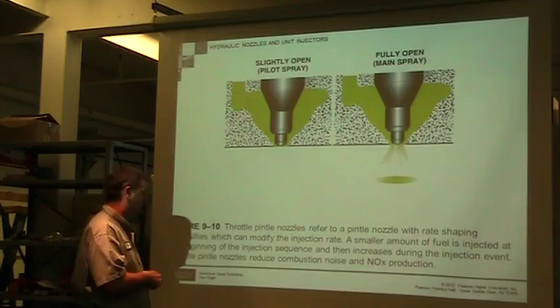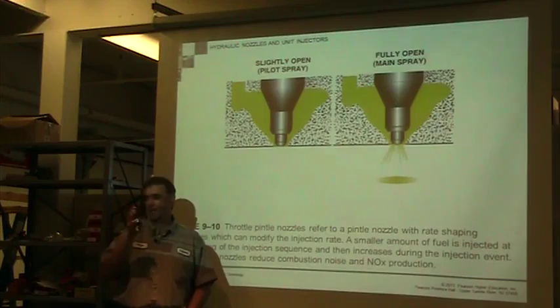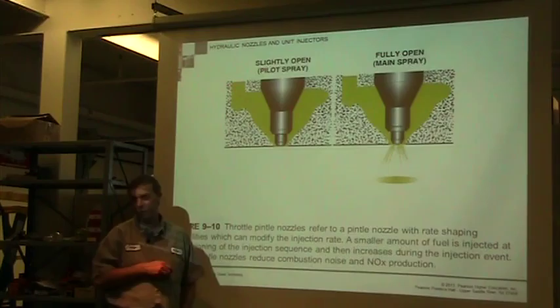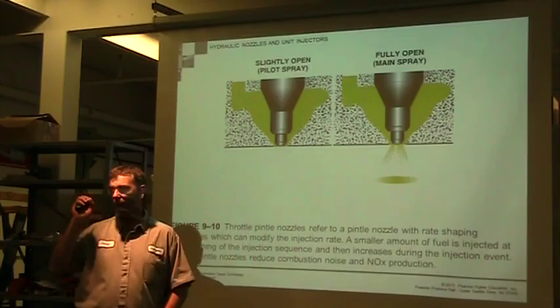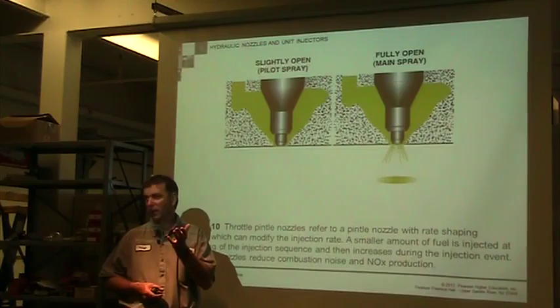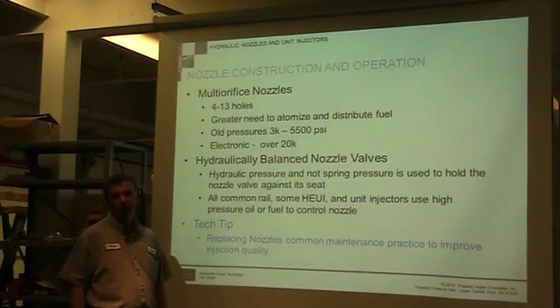Rate shaping is talked about a lot, and these newer injectors do a lot of it. Instead of getting a single square shot of fuel, we're able to modify the fuel rate to get something more useful. As the needle tip opens up, the fuel volume is initially reduced — like a pilot injection. Then as it goes up further, you get a larger hole and larger volume — that's the main injection. In a mechanical system you can't open it multiple times like the electronic ones, but there are ways to get a reduced opening followed by a maximum opening.